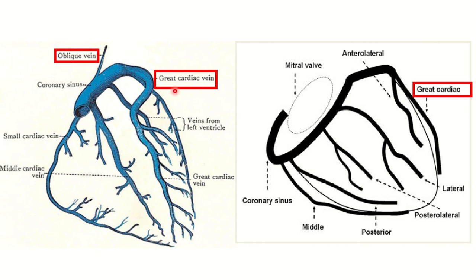Among these tributaries, we have to find out which one is the largest. Here we can see the heart with the tributaries of the coronary sinus. This is the main trunk of the coronary sinus and different veins drain here. The great cardiac vein lies in the anterior interventricular groove. Here we can see the posterior interventricular groove with the small cardiac vein, the oblique vein of the left atrium, and the posterior vein of the left ventricle.